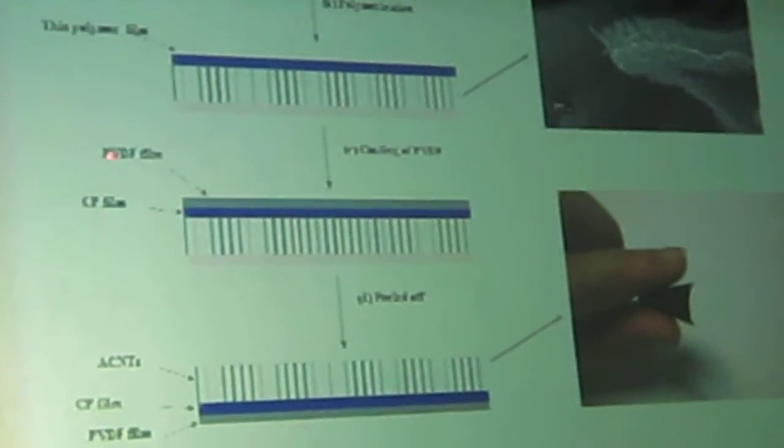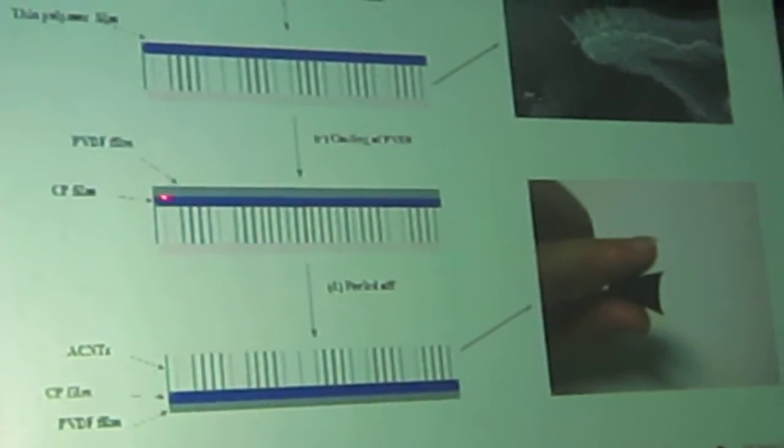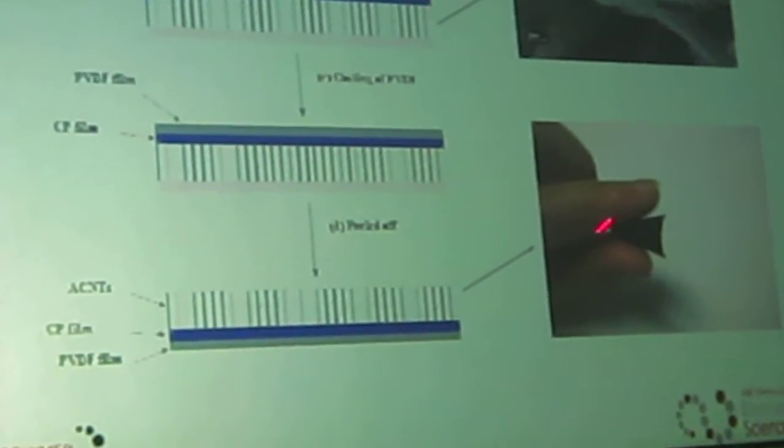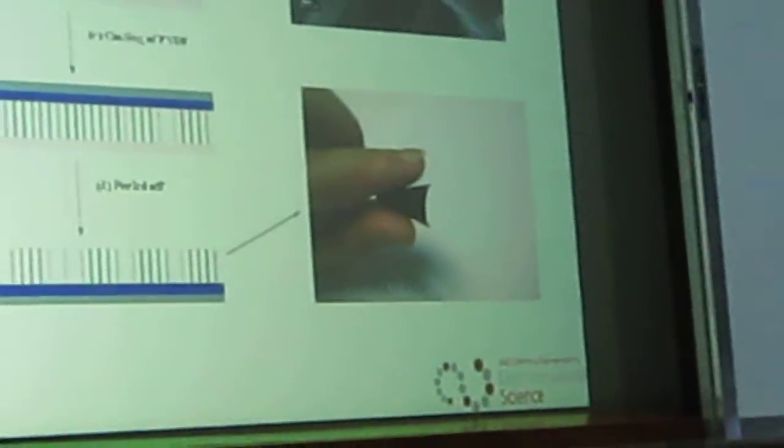Then we do another coating. It can be PEDOT films, which is kind of flexible polymers. Then we can peel them off and show the structures. We can quite bend it. And this is the basic structures with aligned tube of PEDOT.